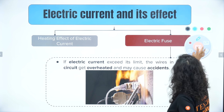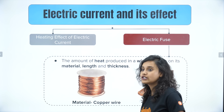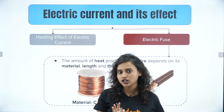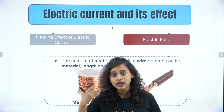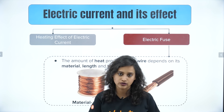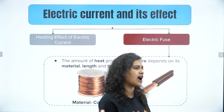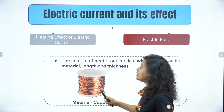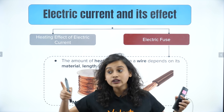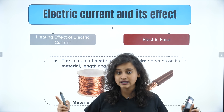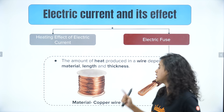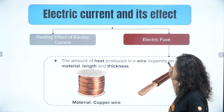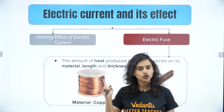Now let's understand what kind of materials we can use for electric fuse. Conductors are those which allow electricity to pass through them, and insulators do not. Copper, iron, and metals are generally conductors. Depending on the material, length, and thickness of a wire, the amount of heat produced will vary. So the amount of heat produced in a wire depends on its material, length, and thickness.